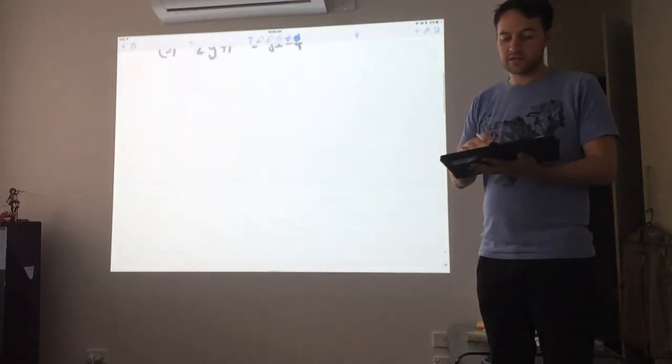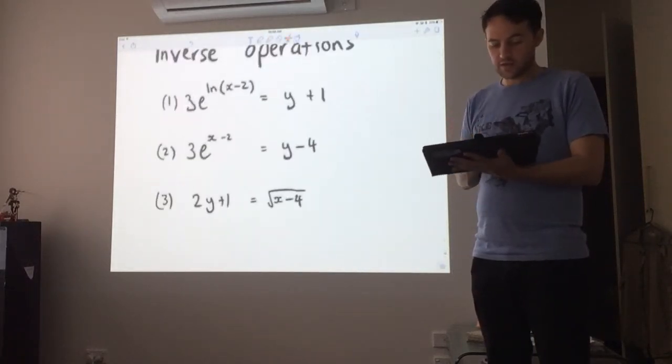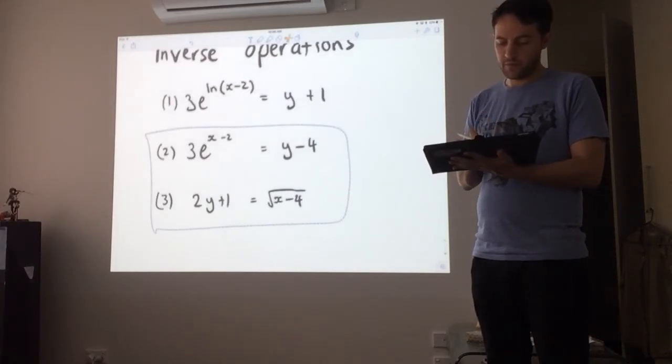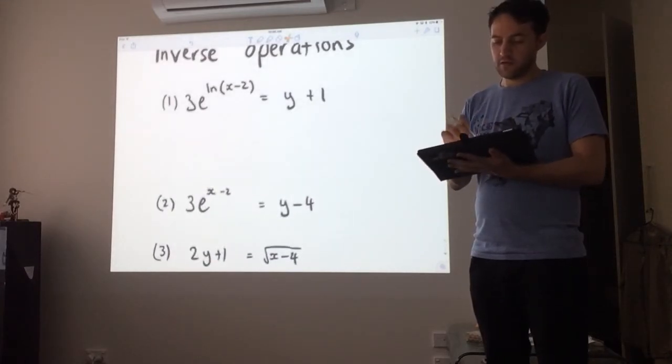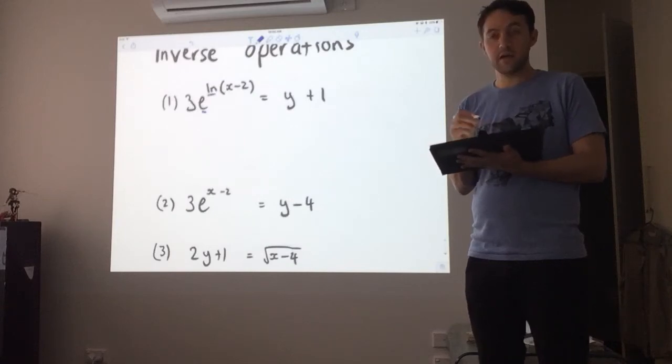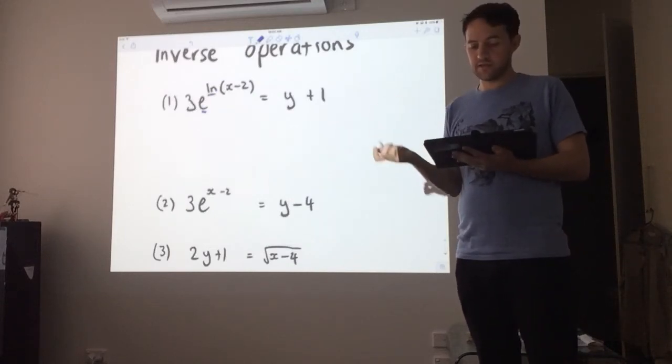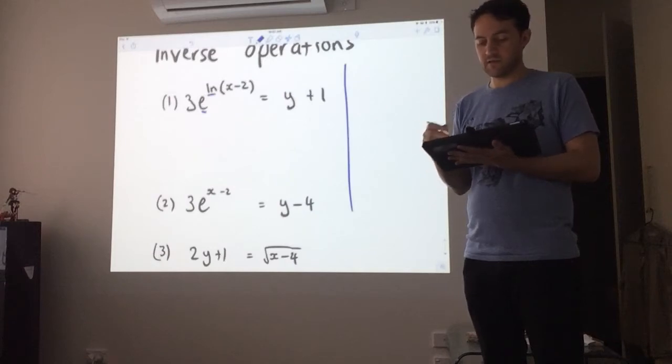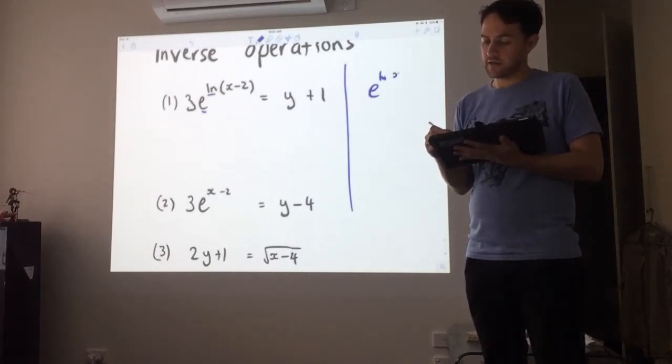So when we're doing questions back to here, the questions that we're doing, in this case we've got e to a log, and these operations also cancel each other out. So as with the e to log to e, e to the log of anything, x squared plus 1, just equals that anything.